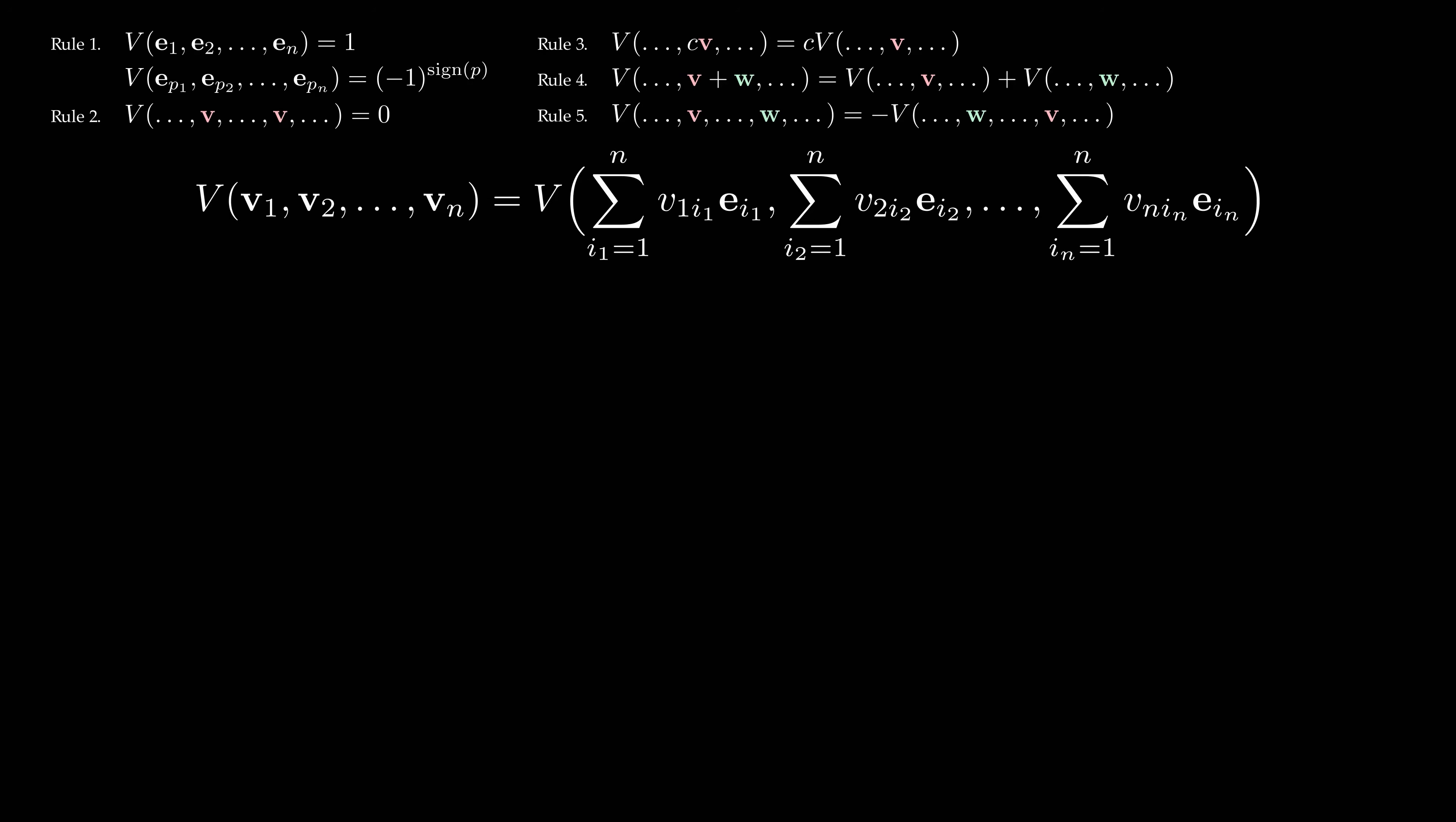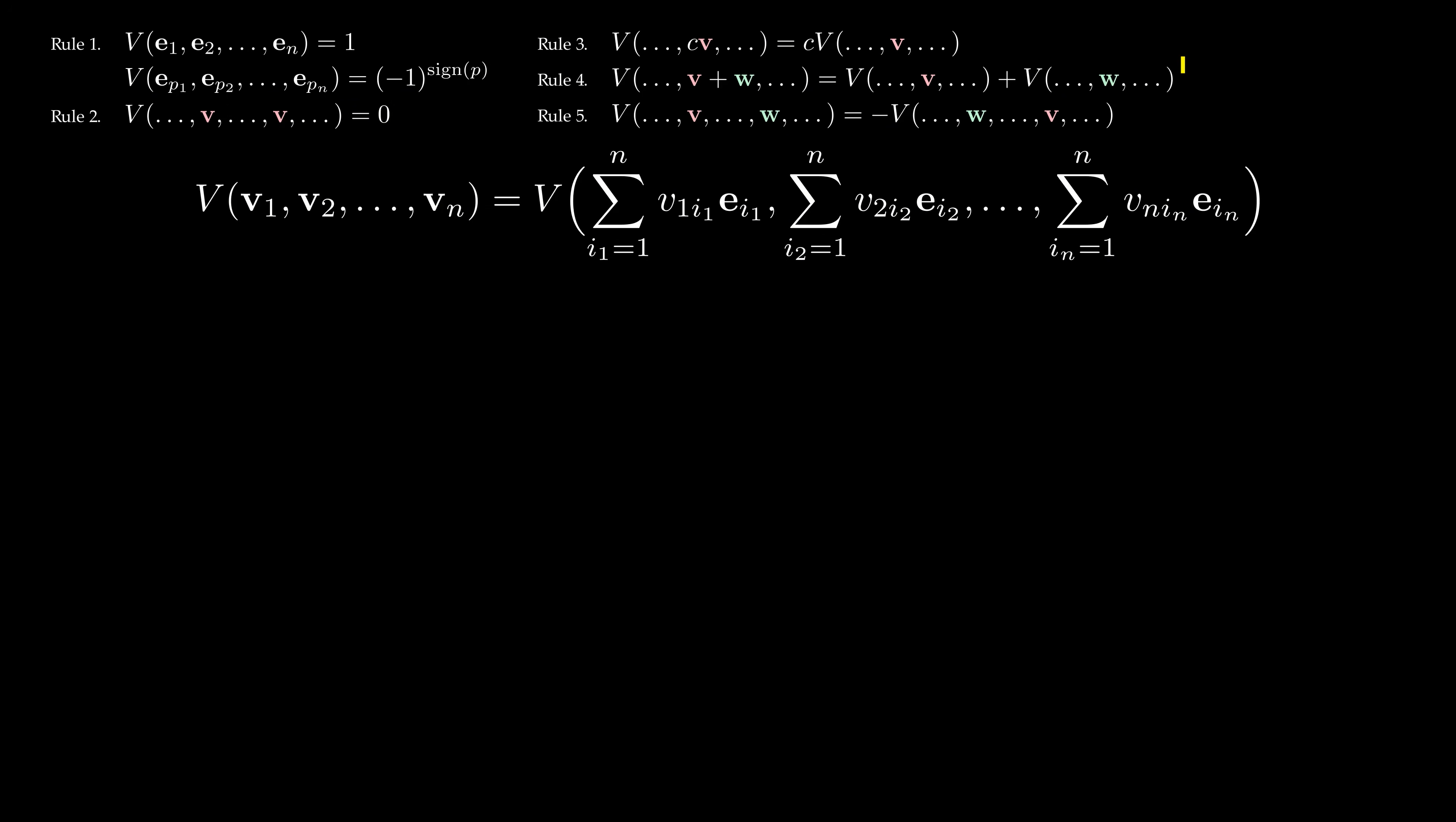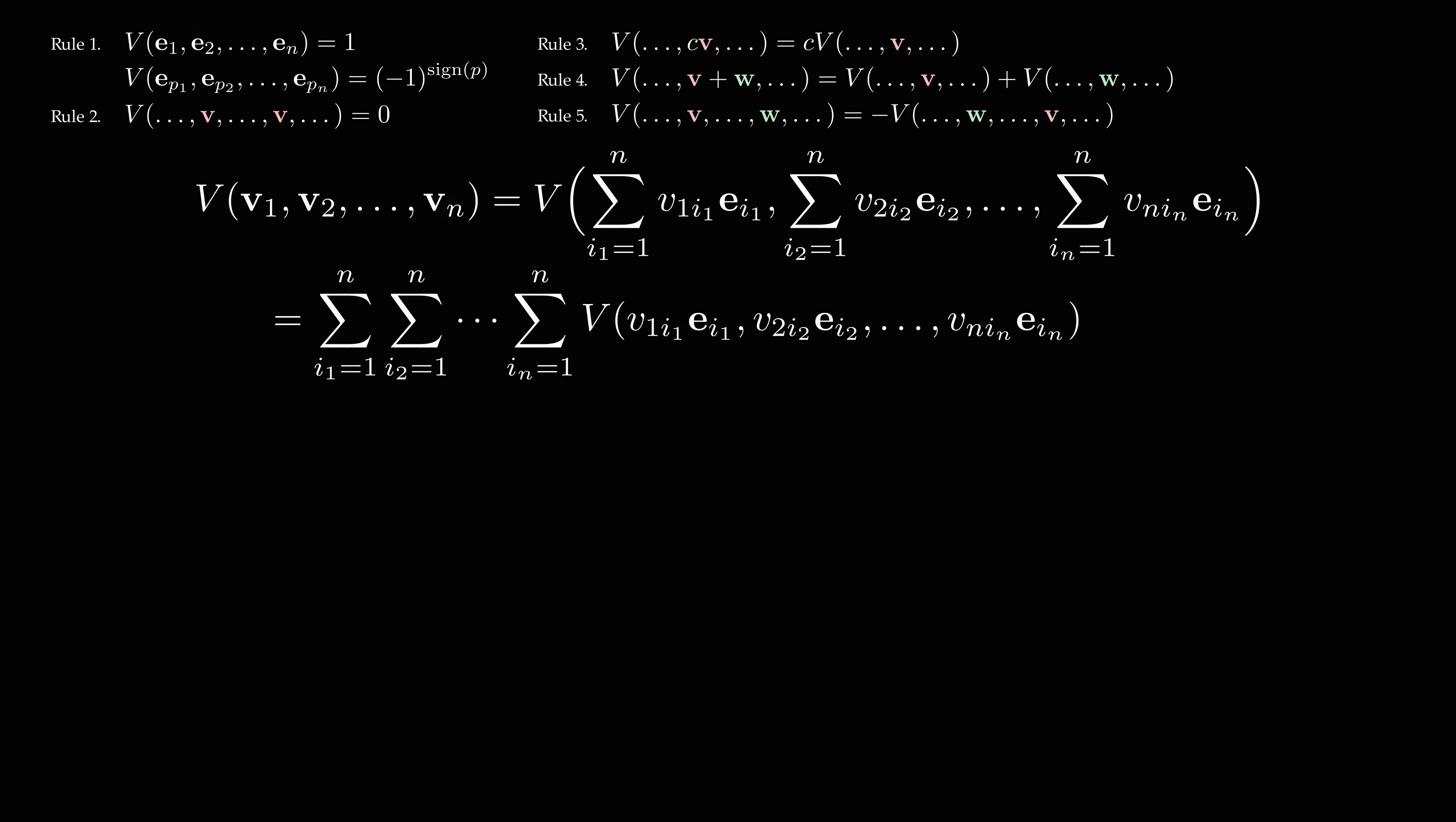We start off by expanding the vectors in coordinates, then we apply rule 4 to split the expression into a sum of many small terms. There are n to the power of n terms in this sum, which is a lot. For n equals 3, we saw earlier that there were already 27 terms in the sum.